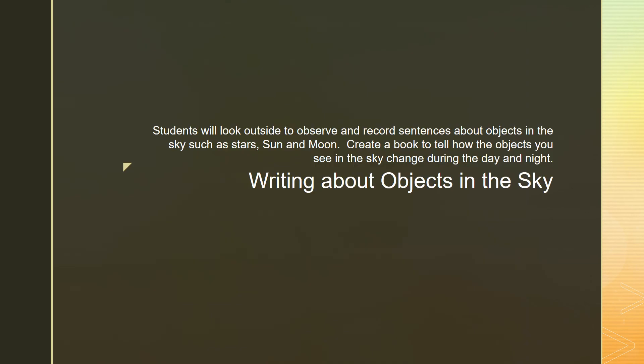This week, you are writing about objects in the sky. Students will look outside to observe and record sentences about objects in the sky, such as stars, sun, and the moon. Create a book to tell how the objects you see in the sky change during the day and night.